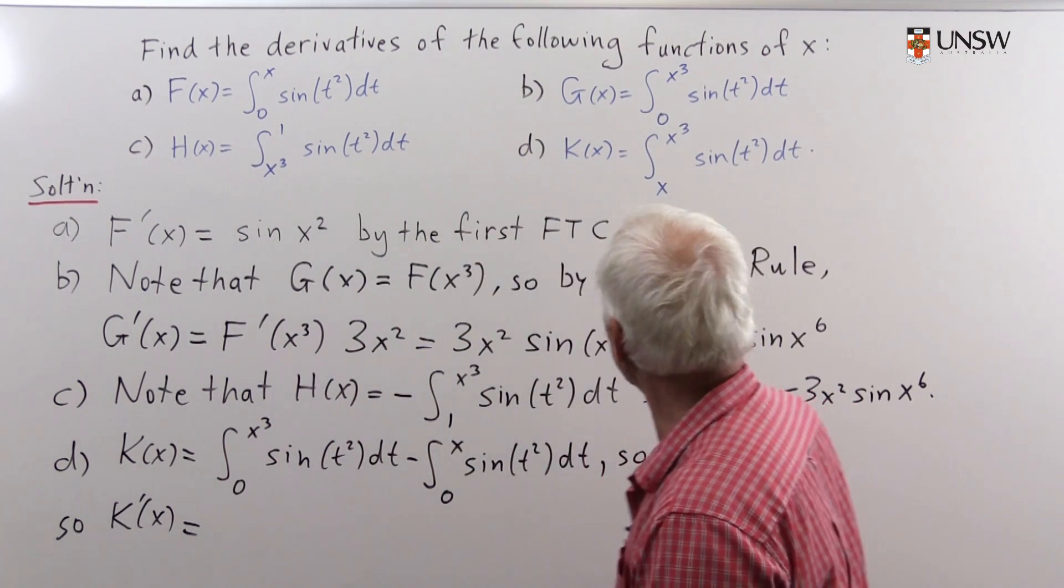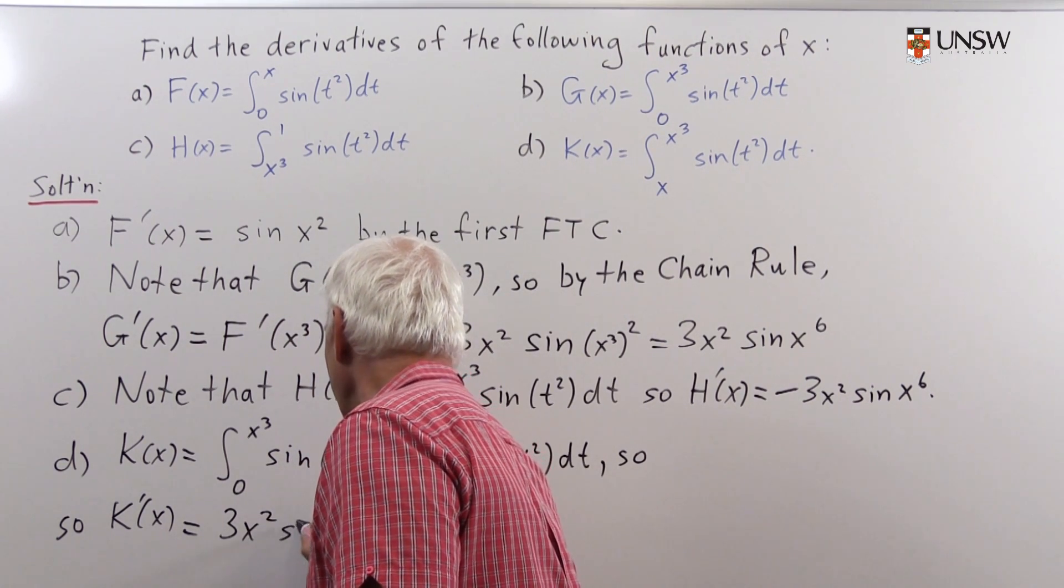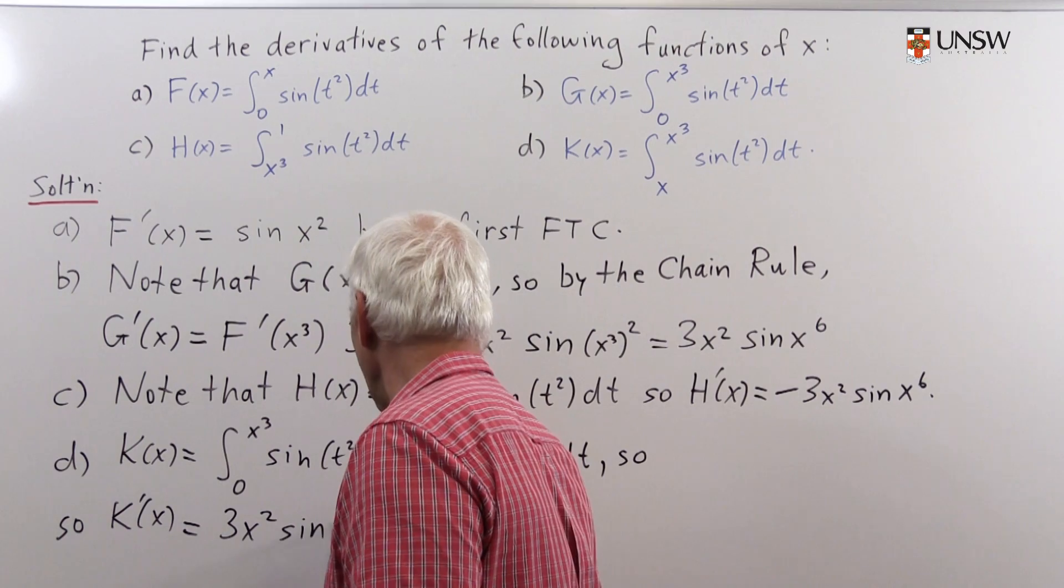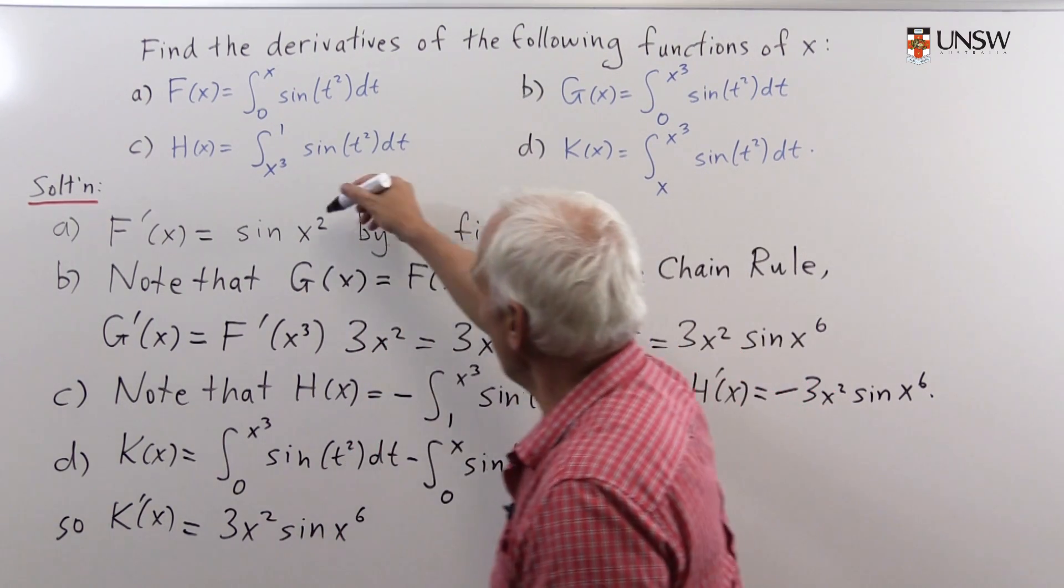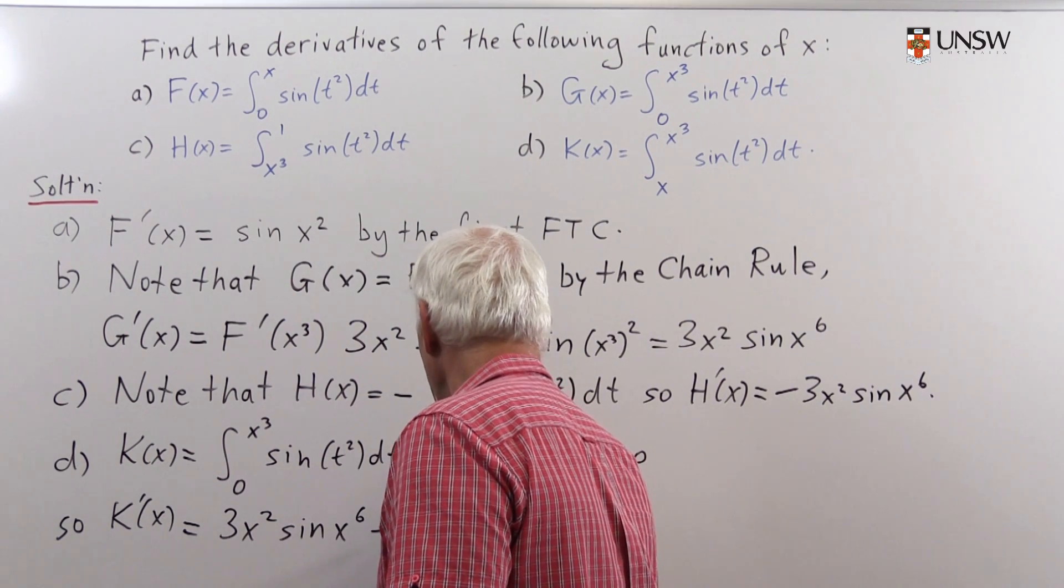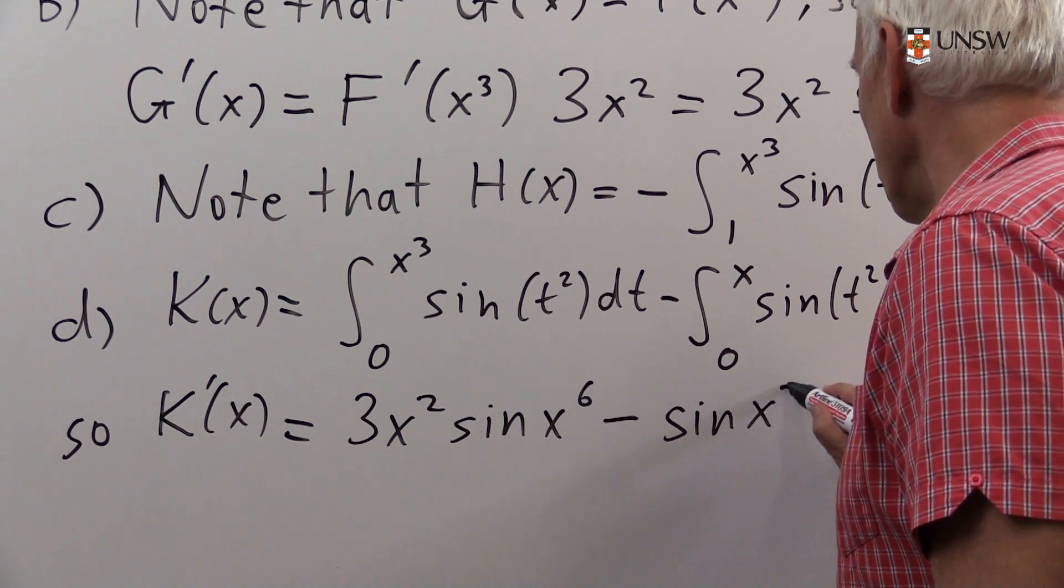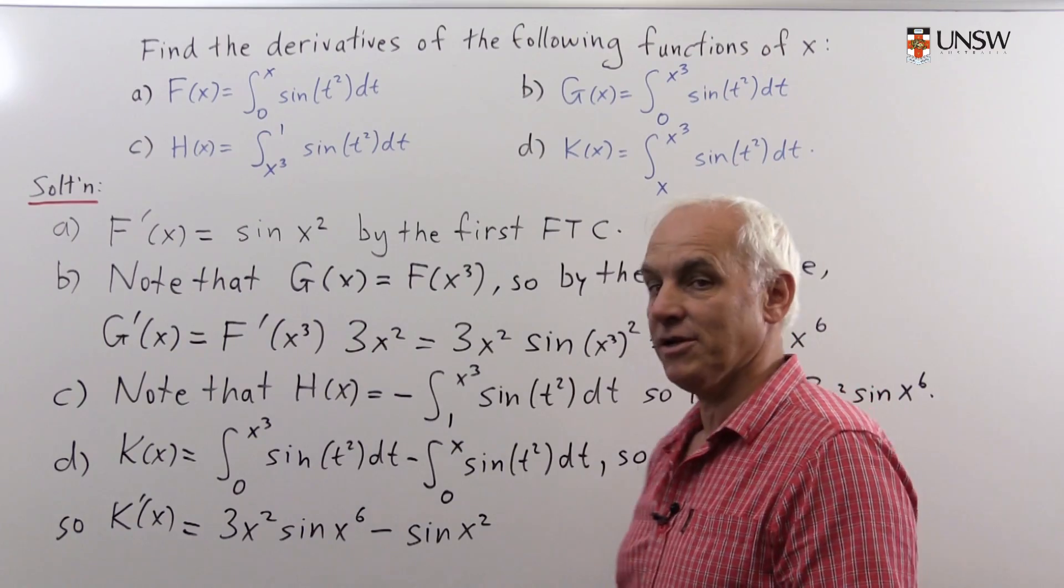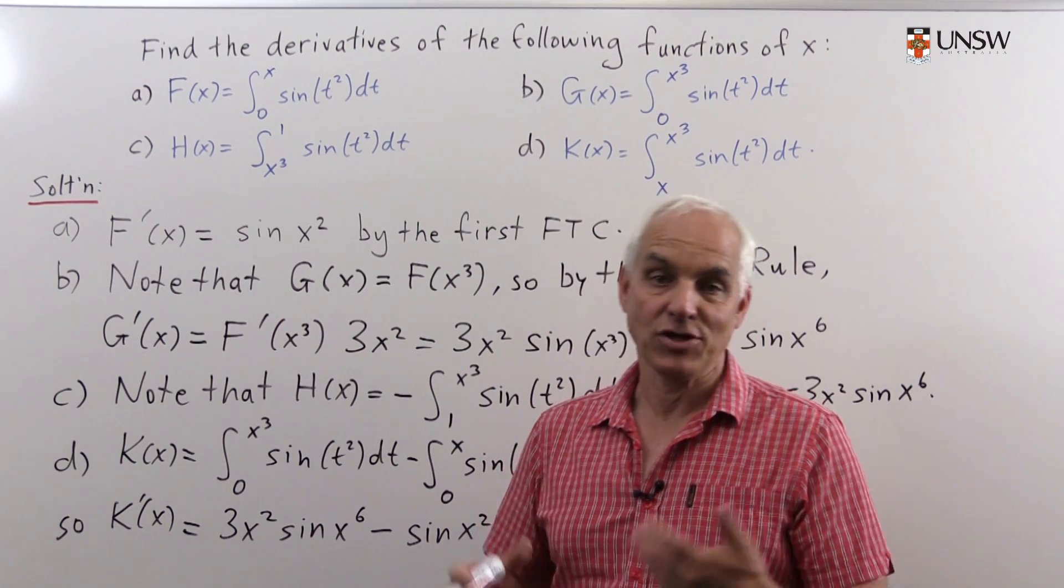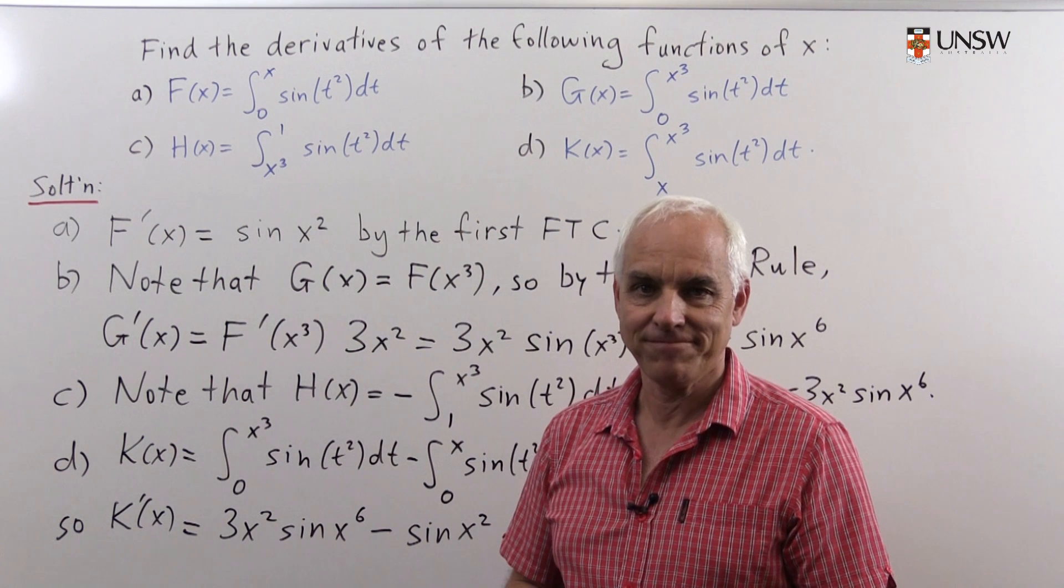It's 3x² times sin(x³) squared, or x to the sixth, so 3x² sin(x⁶). The derivative of the second integral is what we did in part (a): minus sin(x²). That's how we use the chain rule together with the fundamental theorem of calculus to take derivatives.